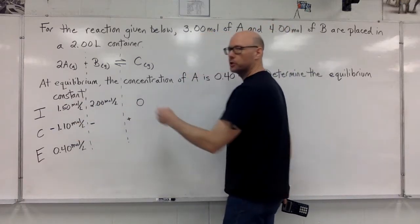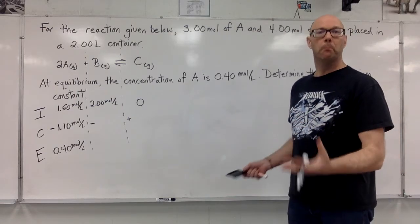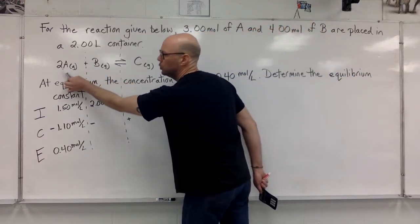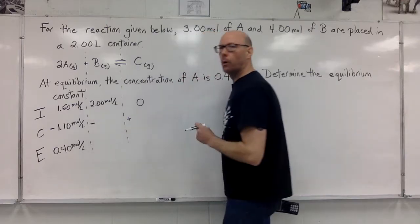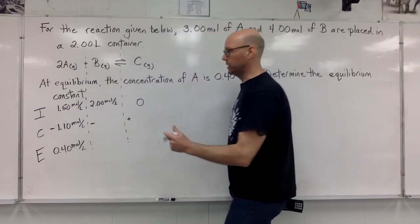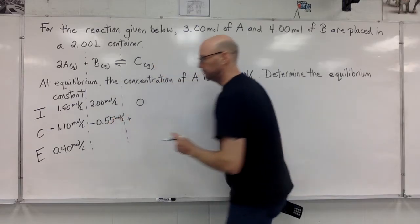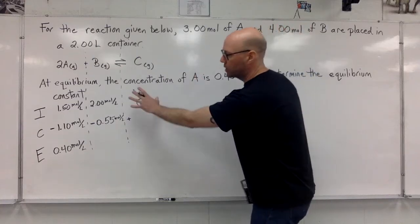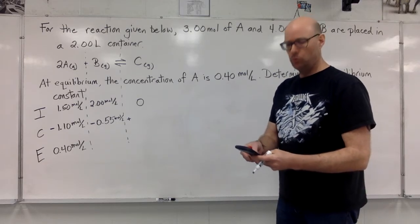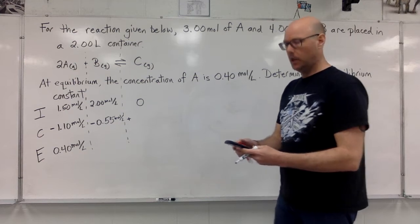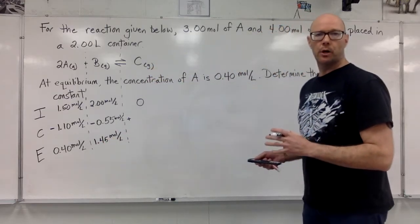Our next move is to go from column to column. We can only move across the ICE box on the change line. Here, we have to follow stoichiometric mole ratios. Look at this. B is in a 1 to 2 ratio with A, so its change was half as much. A went down by 1.1, so B must decrease by 0.55 moles per liter. Half as much. When we do that subtraction, 2 subtract 0.55, I'm doing it on my calculator. 1.45 moles per liter. That's the equilibrium concentration of chemical B.